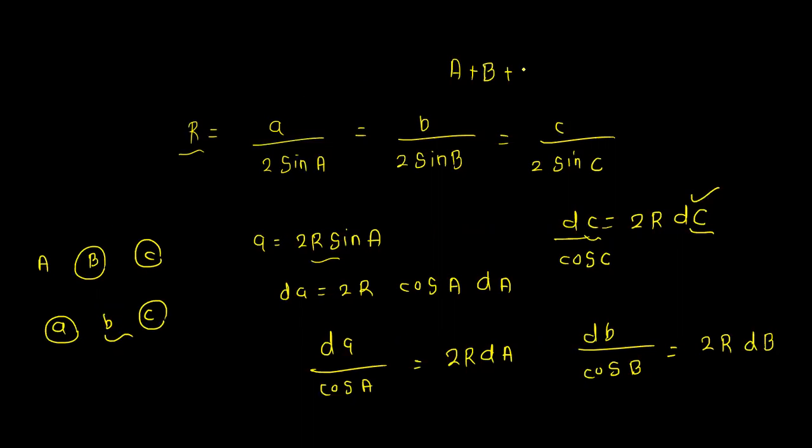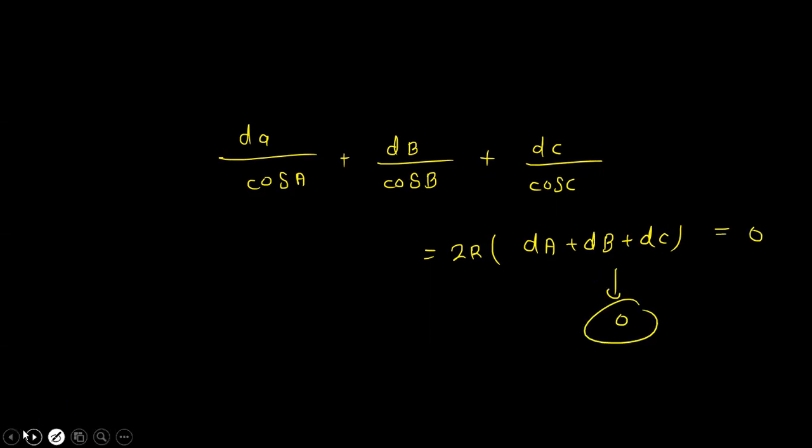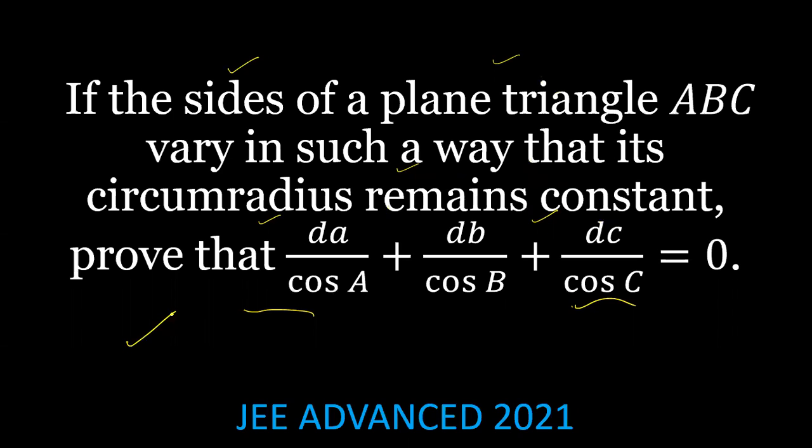Since capital A plus capital B plus capital C is equal to pi, when we differentiate, this sum value will be 0, and we can prove it in this way.